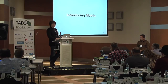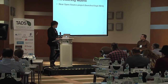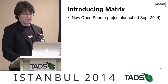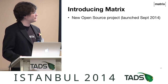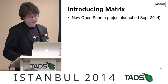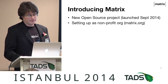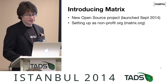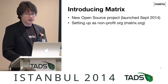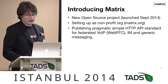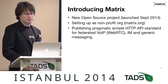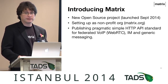Our solution, our proposal, is Matrix. Matrix is open source, Apache licensed, and we launched about seven weeks ago, so it's comically early days for us. We're a US 501(c), or will be shortly once the lawyers have finished. Matrix.org is where we live. It's a very pragmatic, simple HTTP API standard for federated messaging of any flavor.